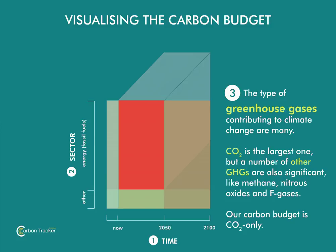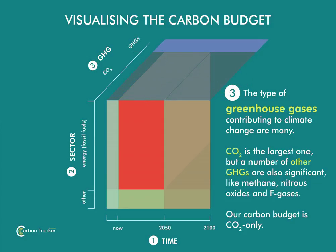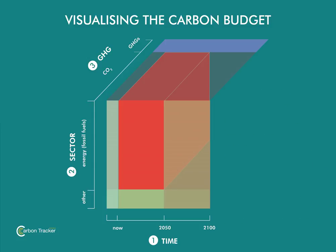Thirdly, we must select which greenhouse gases we are interested in. As the name suggests, Carbon Tracker is interested in carbon dioxide, which is the most prevalent greenhouse gas emitted globally. As you can see, a cube has taken shape that is formed of a number of smaller cubes, each representing emissions for different greenhouse gases, for different sectors, and for different time periods.